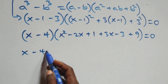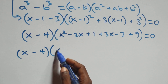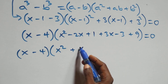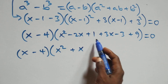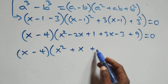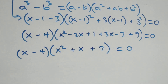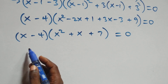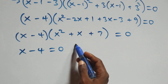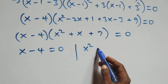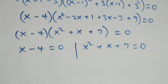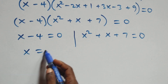So we have (x minus 4) times the bracket. Expanding: x squared minus 2x plus 1, then plus 3(x minus 1) giving plus 3x minus 3, then plus 9. This simplifies to x squared minus 2x plus 3x which is plus x, then 9 minus 3 plus 1 giving plus 7. So we have x minus 4 times (x squared plus x plus 7) equals 0, giving two possible cases.